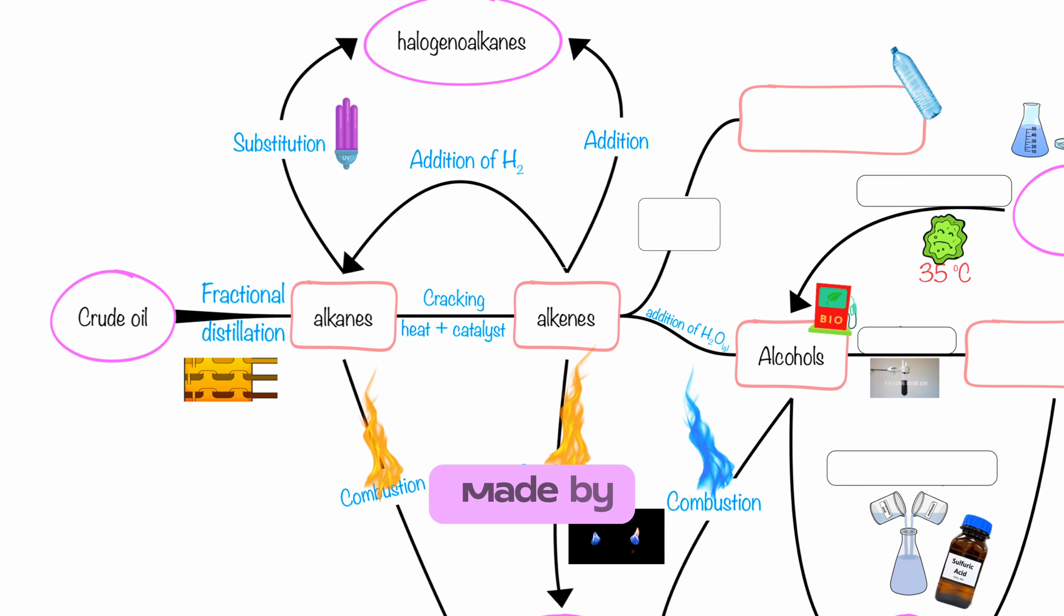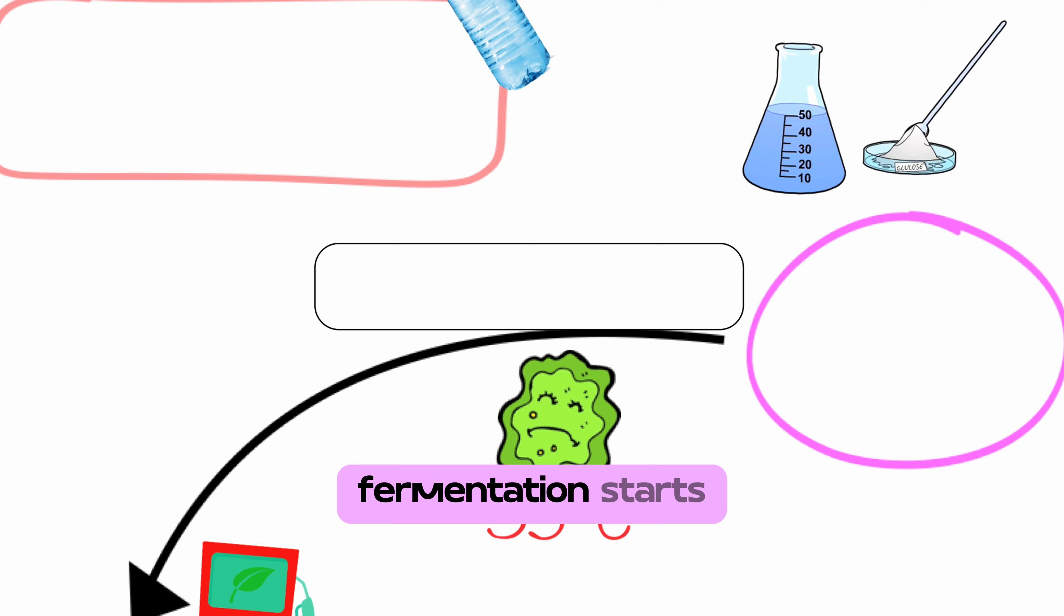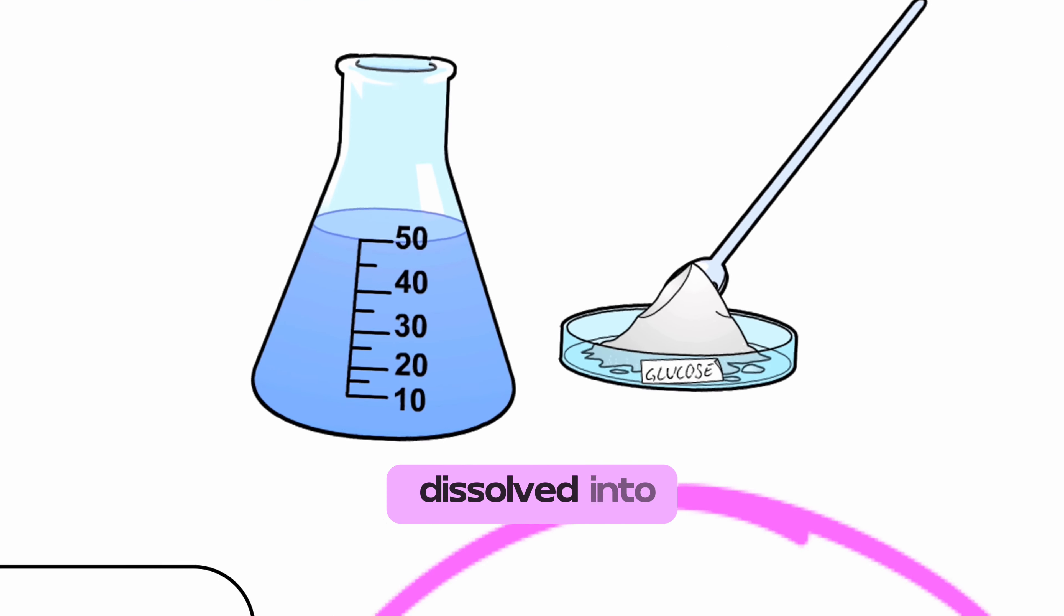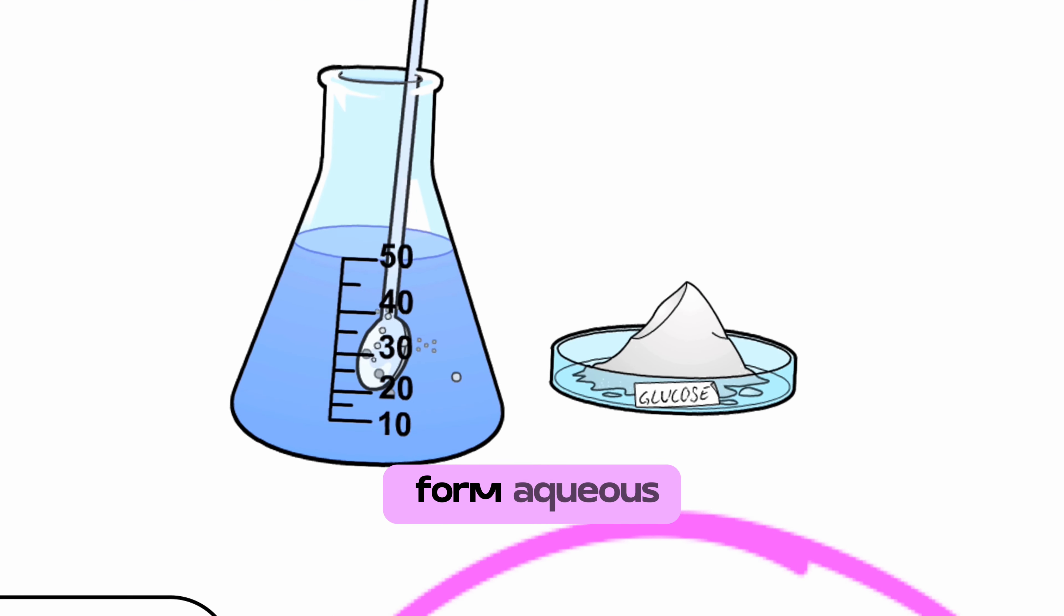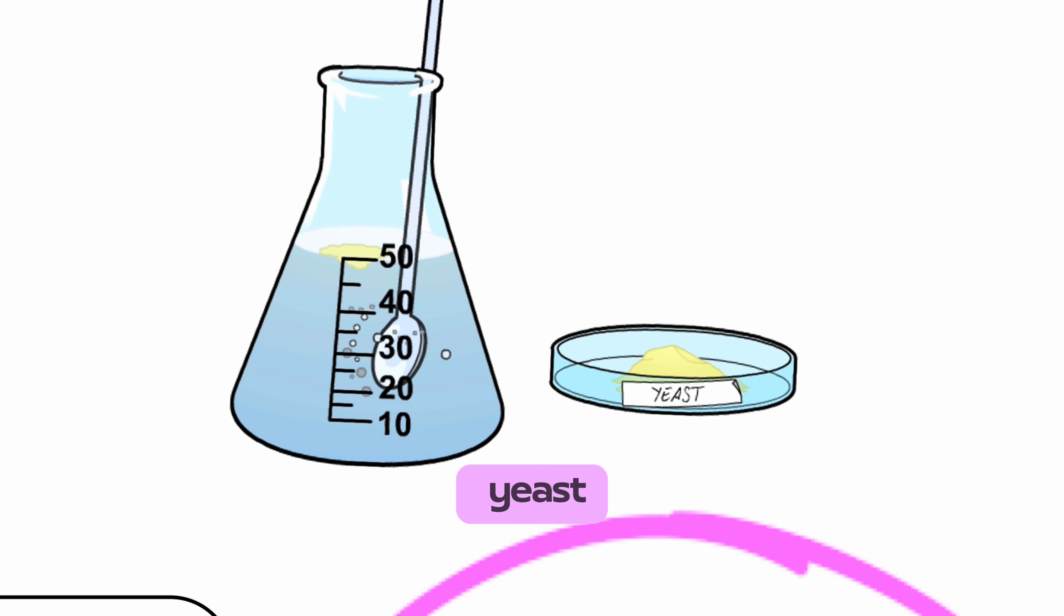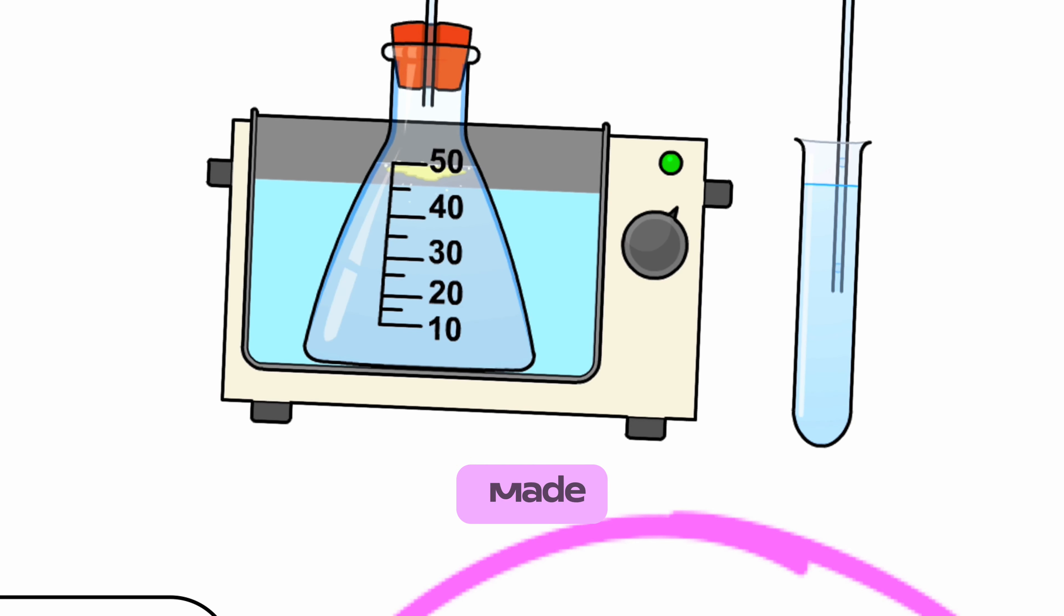Alcohols can also be made by means of fermentation. Fermentation starts with glucose that is dissolved into water to form aqueous glucose. By the addition of yeast, anaerobically, alcohol is made.